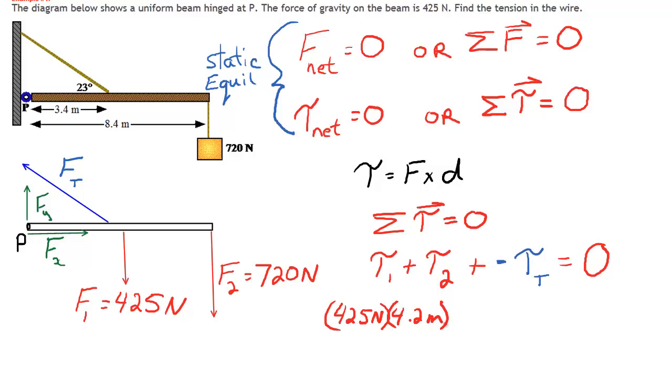Now remember with torques, the force and the distance have to be 90 degrees to each other. So if I'm using a distance of 4.2 meters along the beam, that force has to be at right angles to that distance, and it already is. So we're good to go with that one. Similarly with F2, the 720 Newton force and the distance to the pivot point are at right angles to each other. So I can put them in directly. So I've got 720 Newtons of force acting at a distance of 8.4 meters from the pivot point.